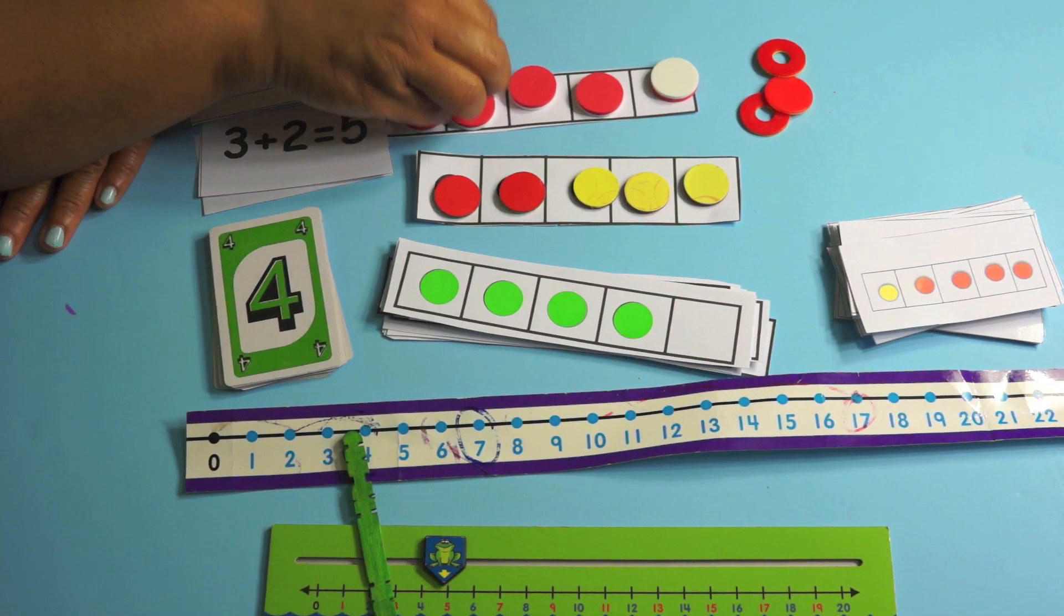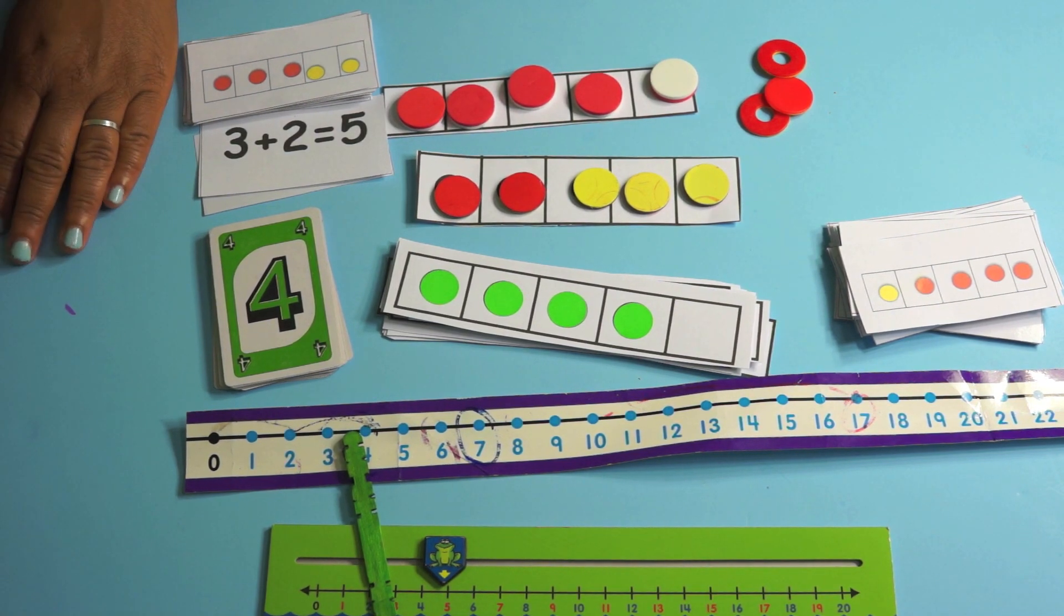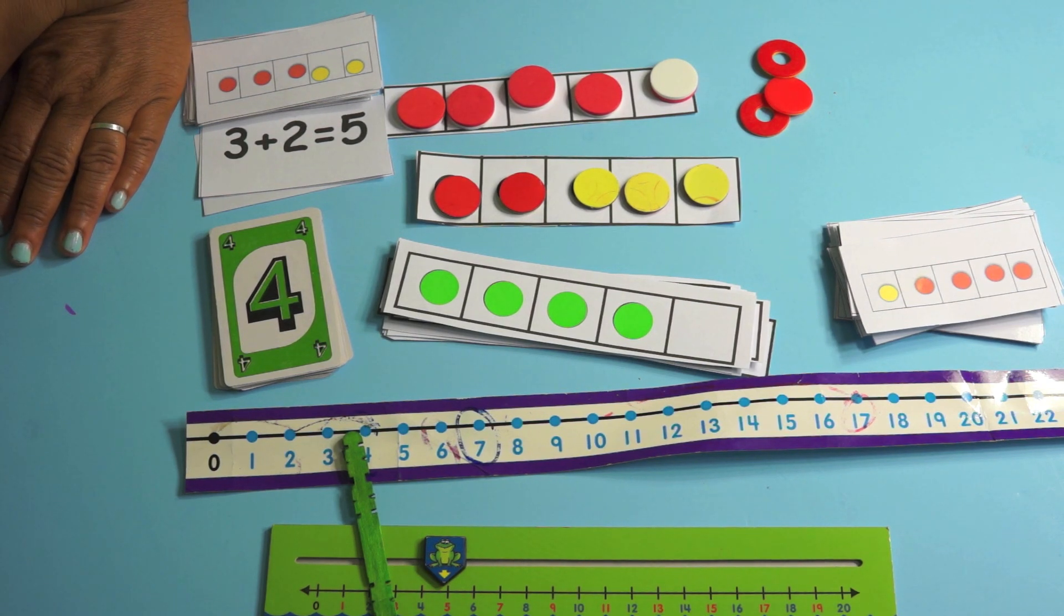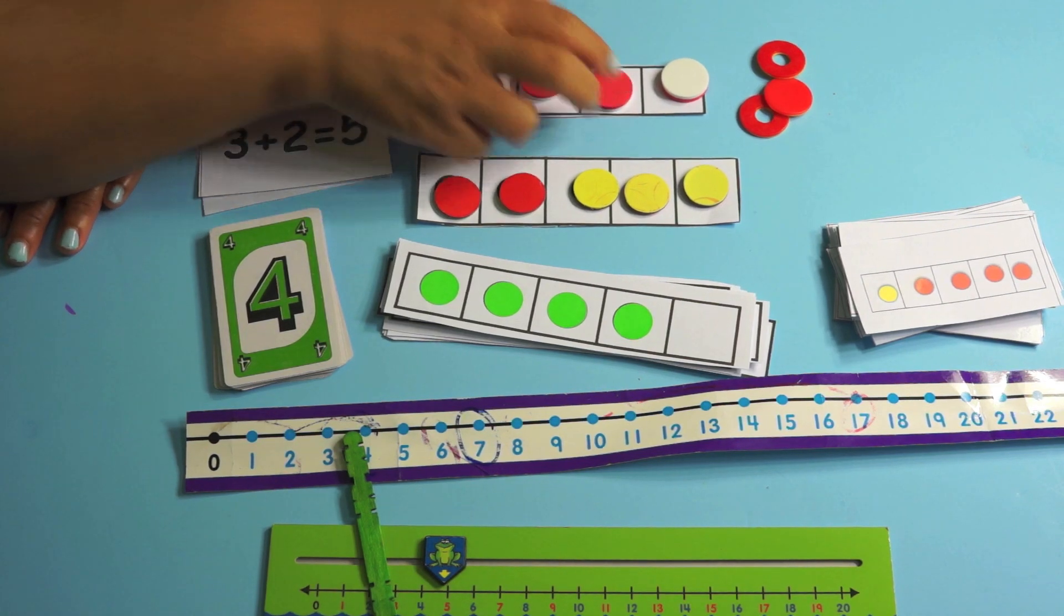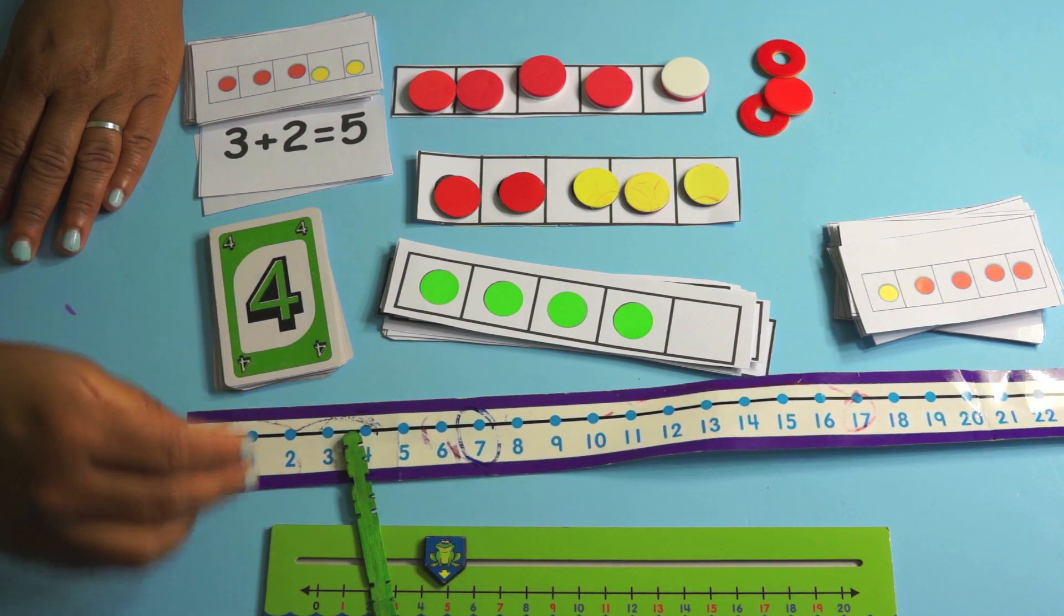This is the concrete level. When you have them draw it out, that's the pictorial level. Remember you always want to teach concrete, pictorial, abstract. That is the way that you want to teach kids how to do it. Concrete, pictorial, abstract, concrete. I'm doing it with the counters. Pictorial, I'm having them draw it out. Abstract, I'm having them work with a number line.